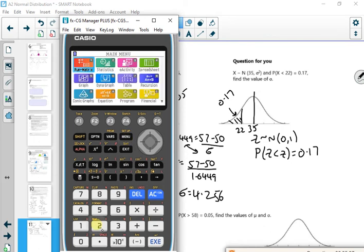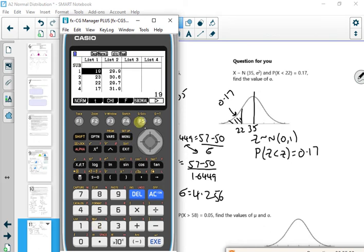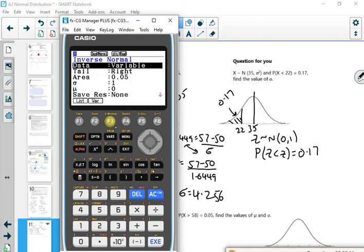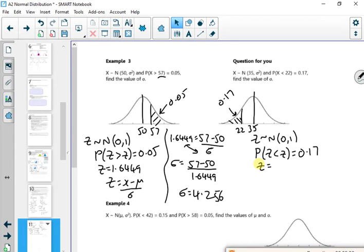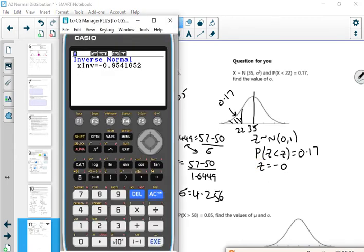So menu 2, distribution, normal, inverse. Left hand tail, 0.17 gives me a z value of minus 0.9542.